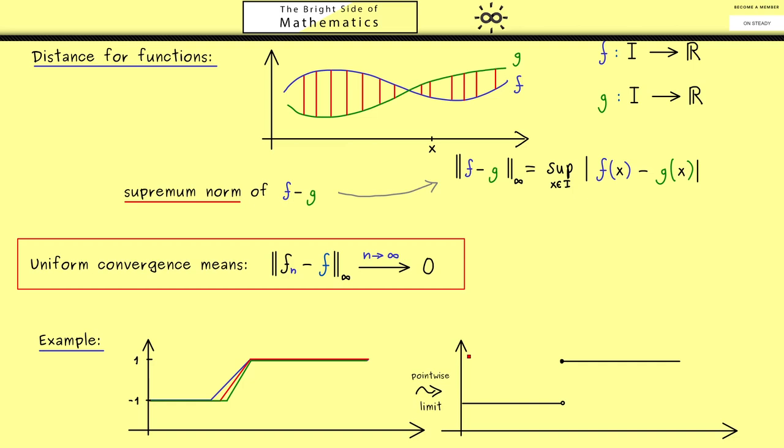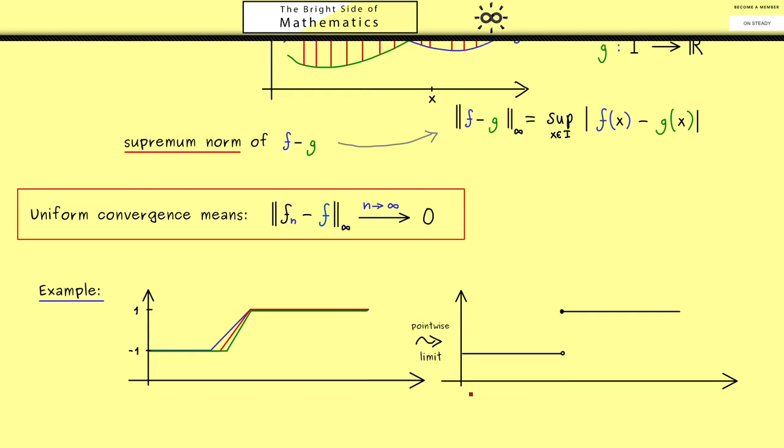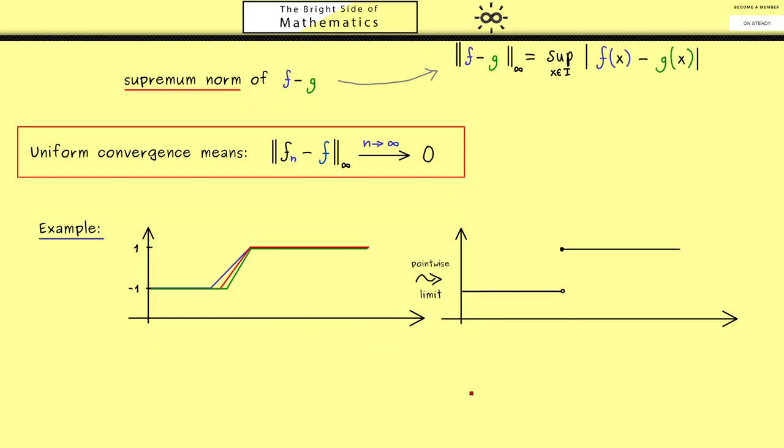What we will see now is that we have the pointwise convergence but not the uniform convergence. Therefore, what we should look at is the distance between f_n and f in the supremum norm. Indeed, this is what we can immediately calculate when we look at the jump. So here we have the jump of our limit function f. Now it does not matter which of the functions from our sequence we choose, because all of them are connected from bottom to top. Hence you can always just take the middle point here and measure the distance to the limit function.